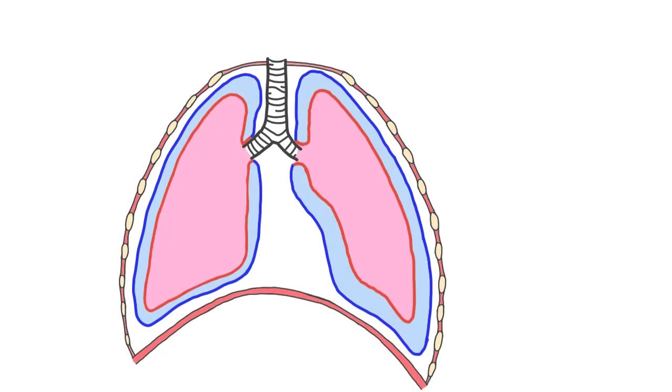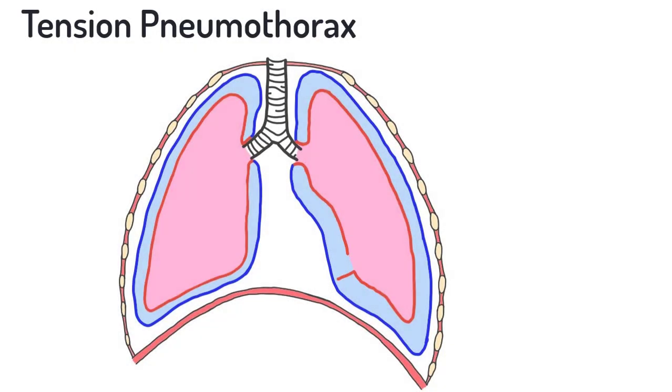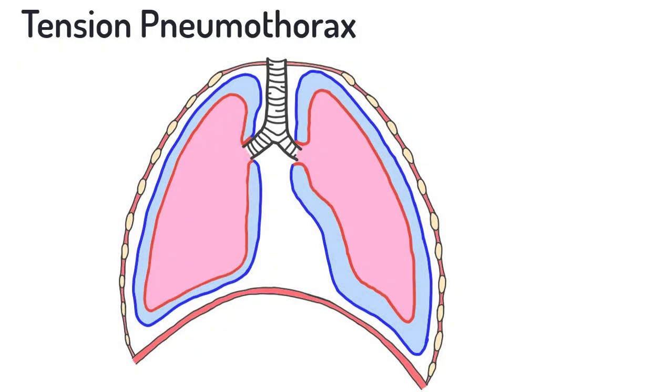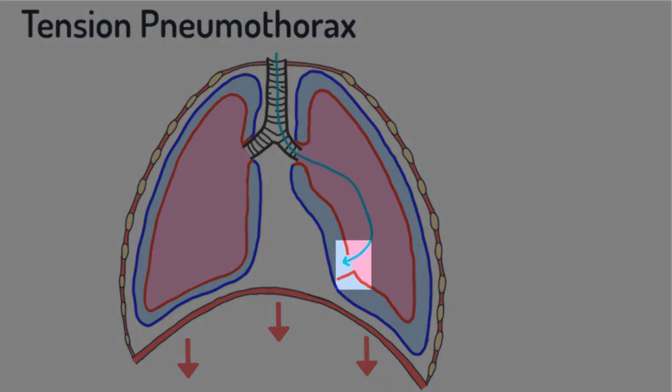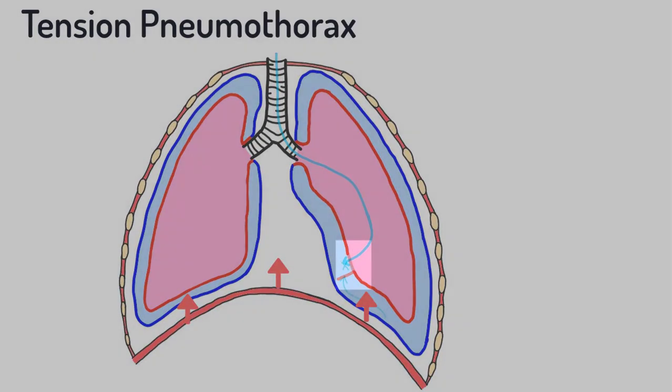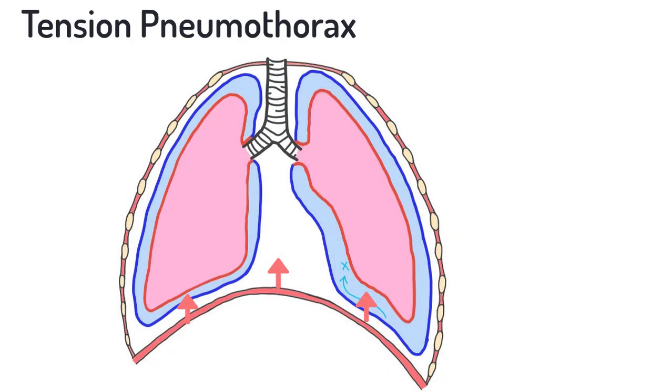We will also discuss a subtype of pneumothorax known as tension pneumothorax. This can occur when the communication between the pleural space and the atmosphere functions as a one-way valve. This is most often a flap of tissue that overhangs the communication. When air is drawn into the thorax during inspiration, the flap of tissue is forced aside and air moves into the pleural space. However, when the air is forced out of the thorax during expiration, the flap of tissue covers the opening and prevents air from exiting the pleural space.